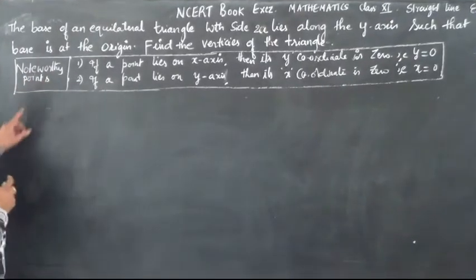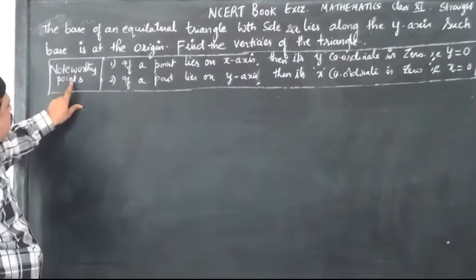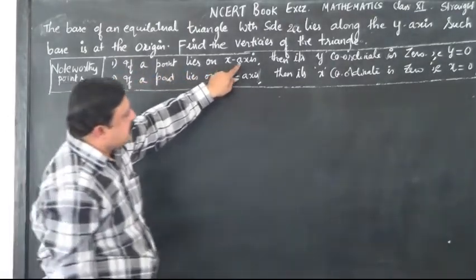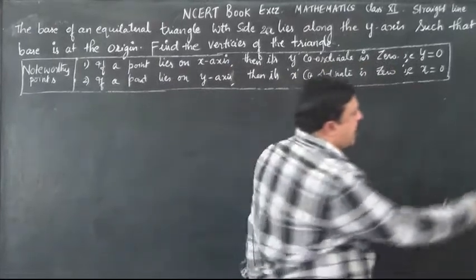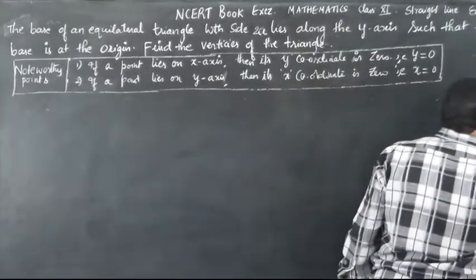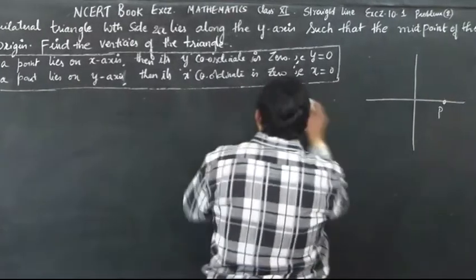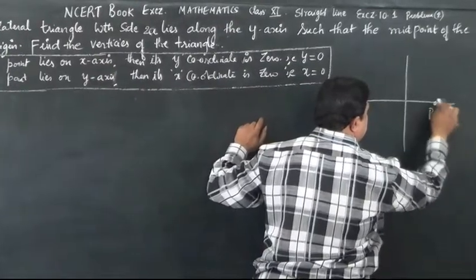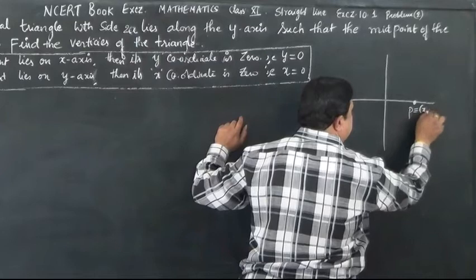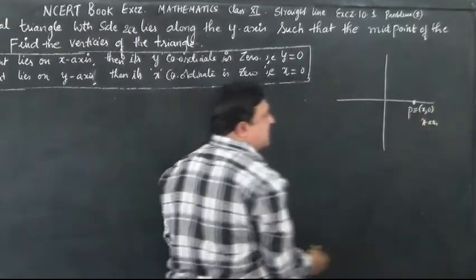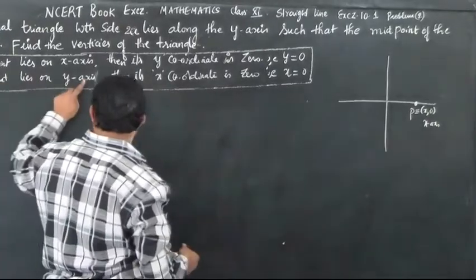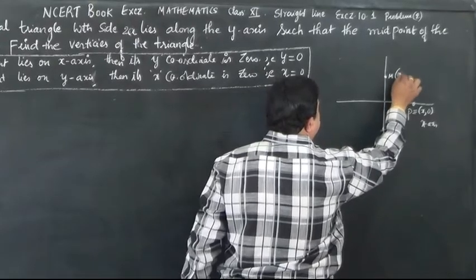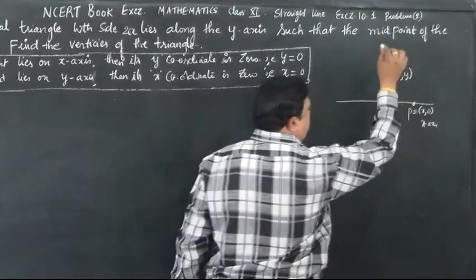Before doing this problem, let's take a look at a note relevant to this problem. If a point lies on the x-axis, then the y-coordinate is 0. For example, if point P lies on the x-axis, its coordinate is (x, 0). Similarly, if a point lies on the y-axis, its x-coordinate is 0, so it is written as (0, y).